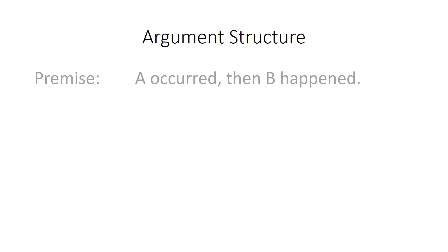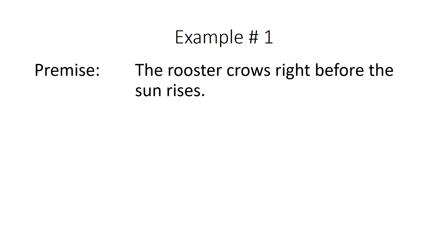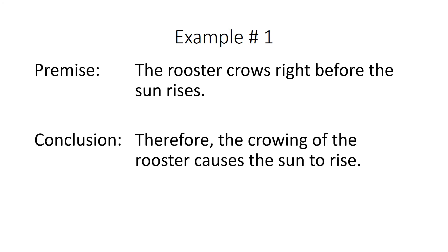The structure of this argument goes something like this: A occurred, then B happened, therefore A caused B. Here's an example: the rooster crows right before the sun rises, therefore the crowing of the rooster causes the sun to rise.